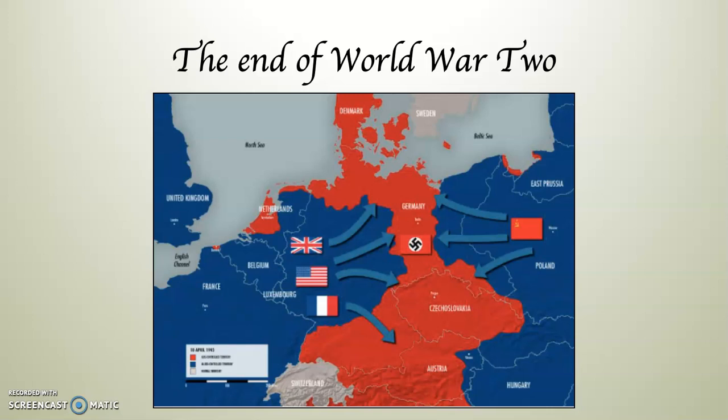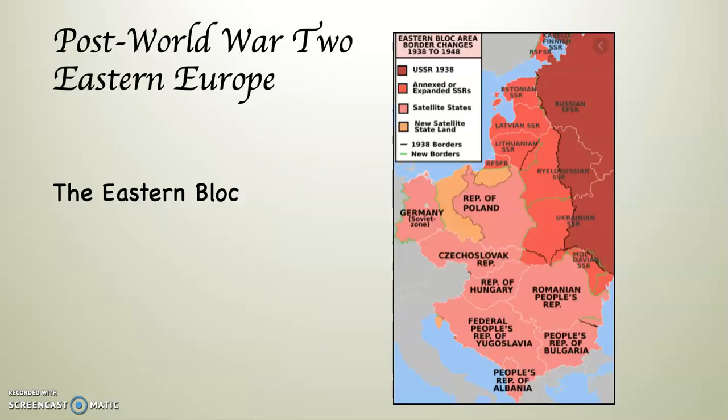Basically, as the war ended, the way things played out in the post-World War II era was this: whosever army ended up on your territory at the end of the war, you were going to fall under their influence. The western part of Europe fell under the influence of the United States and the British, and as a result those countries became capitalist and democratic. Eastern Europe fell under the influence of the Soviet Union, and as a result they became communist dictatorships — what was commonly known as the Eastern Bloc.